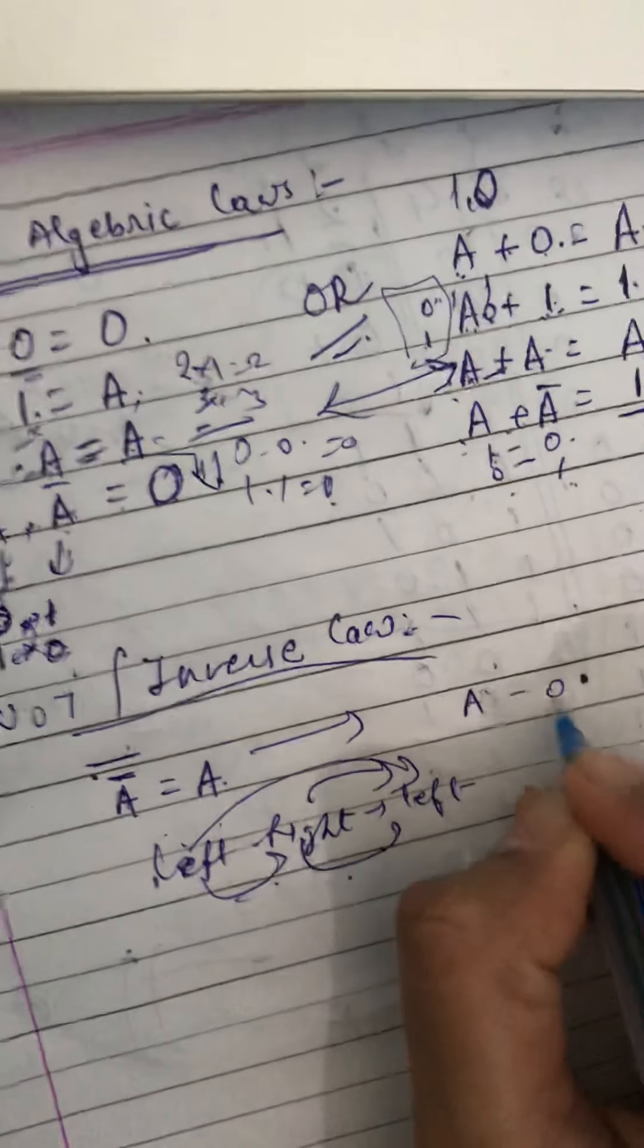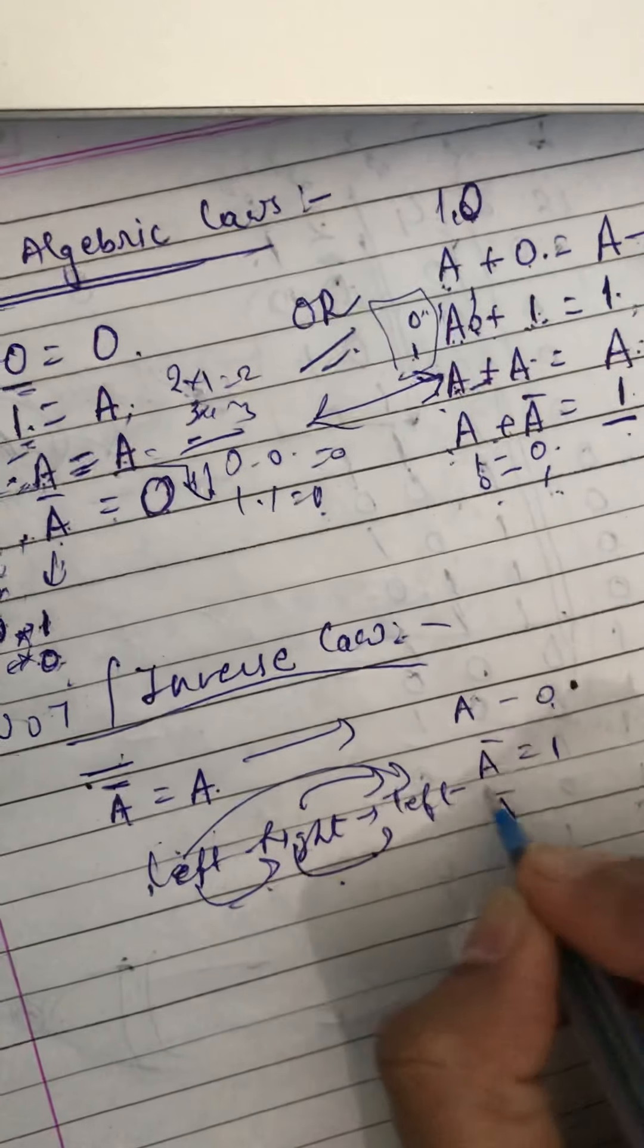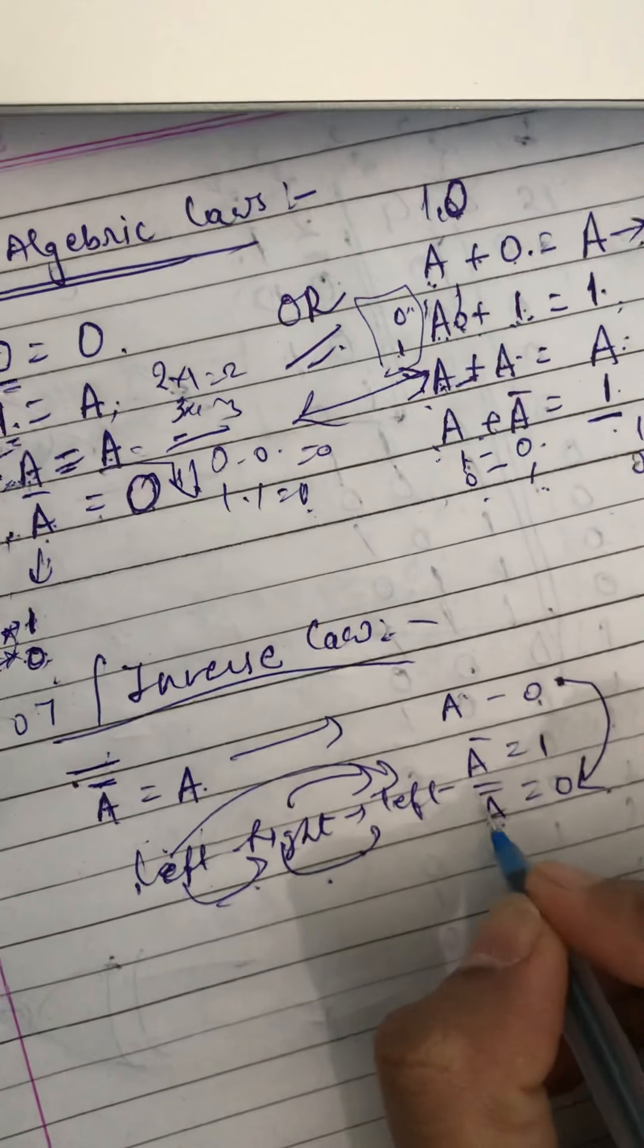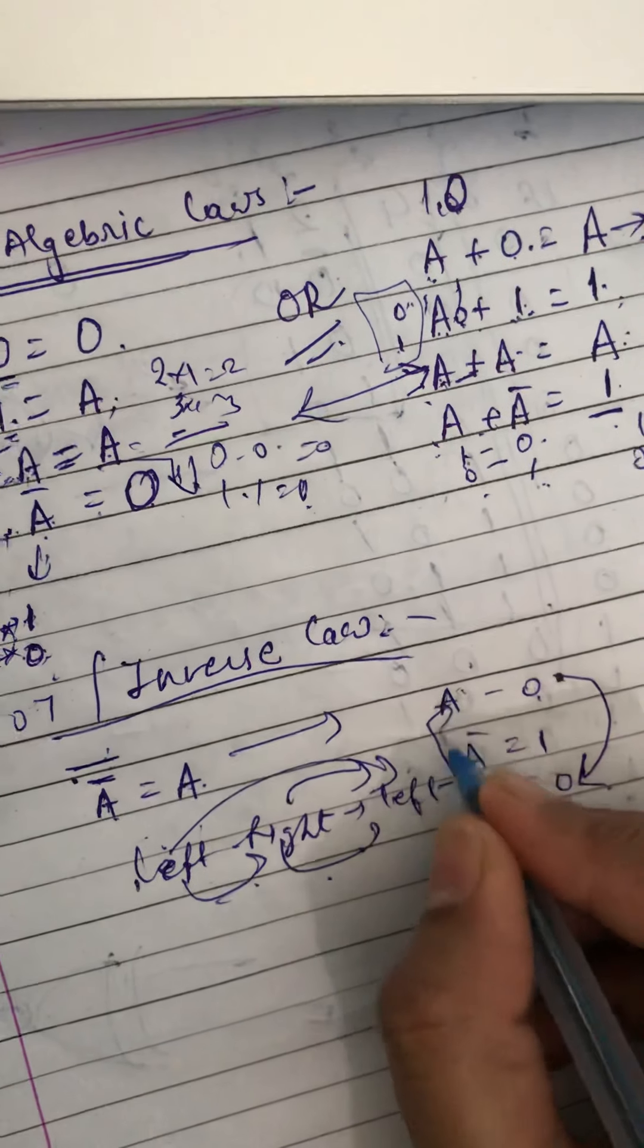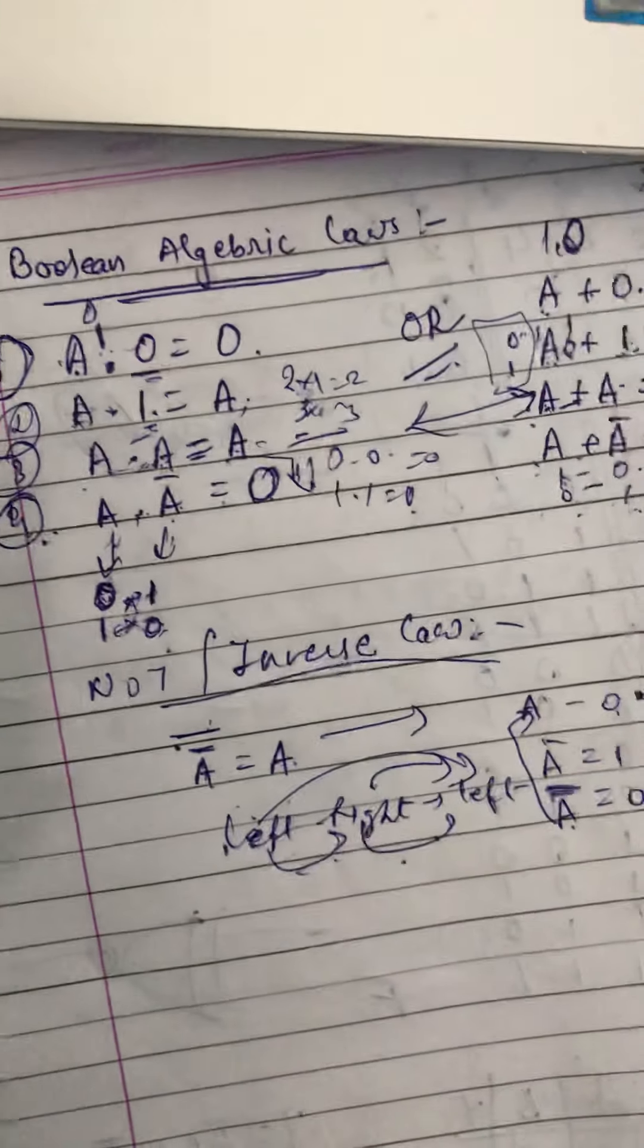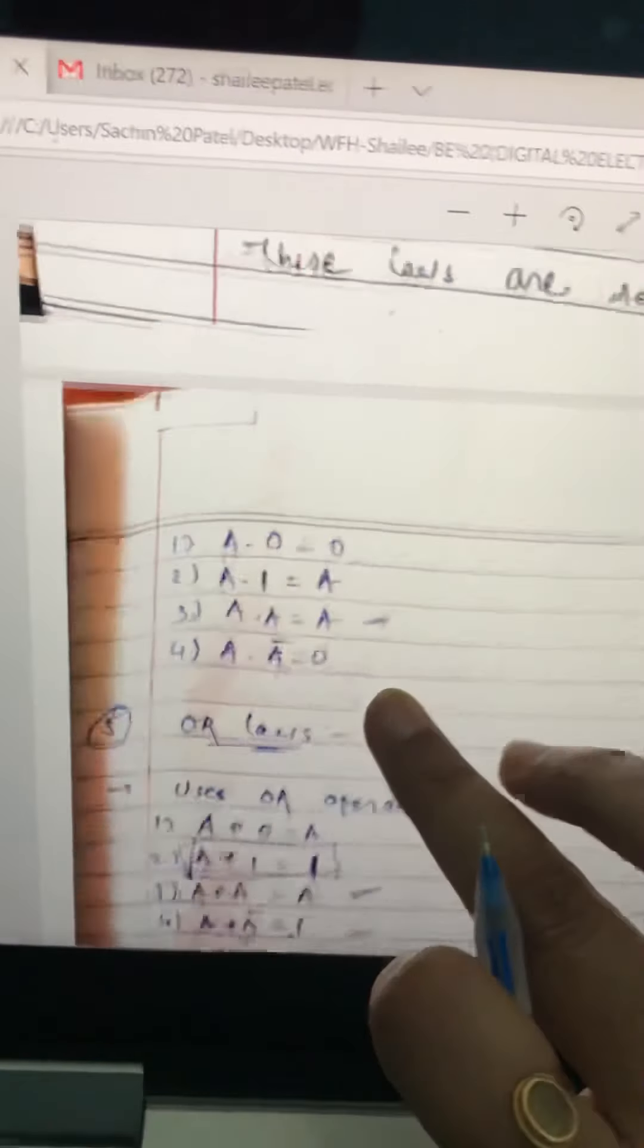Let's consider an example: if A is zero, then A bar will be one, then A bar bar will be again zero. So it is A. That is why A bar bar will be A again. So those are three basic gate laws which we are using in Boolean: AND, OR, and inverse.